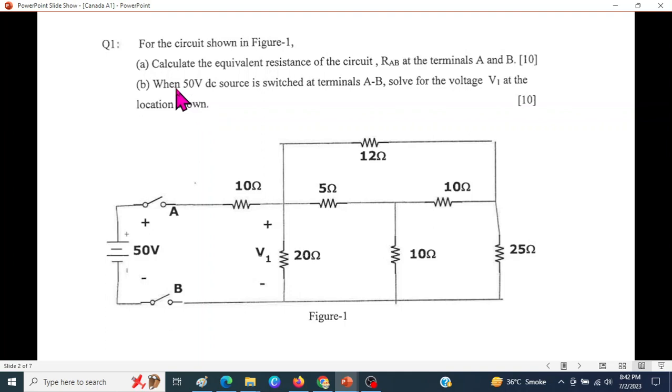Part B is when a 50 volt DC source is switched at AB, the source is connected. Solve for the voltage V1 at the location shown. We have to find the voltage at this point.